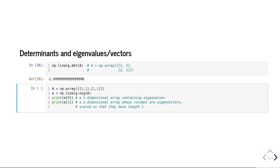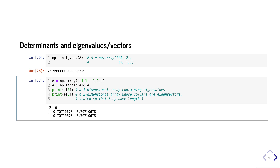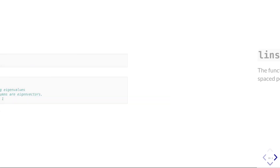NumPy will also compute eigenvectors. For the matrix A = [[1, 1], [1, 1]], we use np.linalg.eig(A). The result E is such that E[0] contains the eigenvalues and E[1] is a 2D array whose columns are the eigenvectors of A. Running this gives eigenvalues 2 and 0. NumPy scales the eigenvectors so they have length 1.